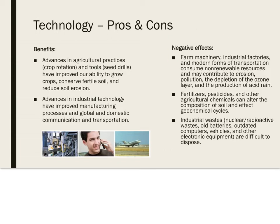There are also negative effects of technology. Farm machinery, industrial factories, and modern forms of transportation consume non-renewable resources and may contribute to erosion, pollution, the depletion of the ozone layer, and the production of acid rain. Fertilizers, pesticides, and other agricultural chemicals can alter the composition of soil and affect geochemical cycles. Additionally, industrial wastes — things like old batteries, outdated computers, and other industrial waste materials — are difficult to dispose of.